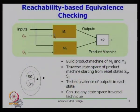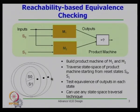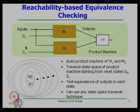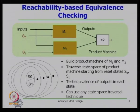Now I will discuss the third technique, which is more common and popular — that is based on reachability analysis. We have two machines M1 and M2, and we generate a product machine out of these two. For this product machine, if we start from initial state S0 of M1 and the initial state of M2, we check whether we can reach some illegal state by traversing this machine. If we reach an illegal state, both machines are not equivalent; otherwise they are equivalent.